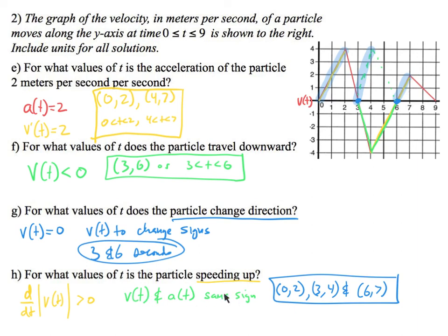Let's verify using the same-sign method: velocity and acceleration must have the same sign to be speeding up. In the interval 0 to 2, velocity values are positive and slope is positive — both positive. In the interval 3 to 6, velocity is negative and slope of velocity is negative — both negative. And from 6 to 7, slope and values are both positive. All these intervals agree. You can look at it two ways; I think the speed graph approach makes more sense, but the same-sign rule is commonly used.